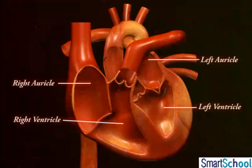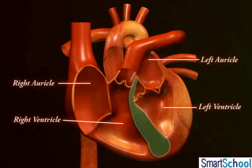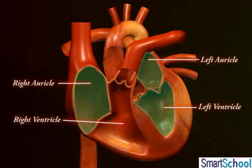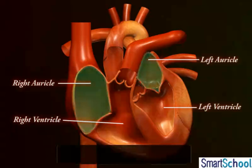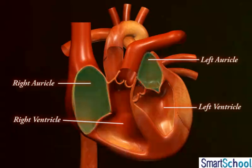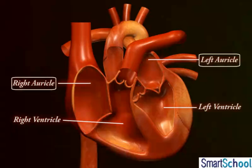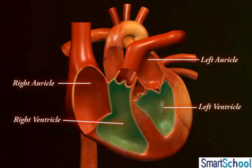The heart is a double pump which is divided by a septa into two halves, the right half and the left half. Each of these halves consists of two communicating chambers, the upper smaller auricle or atrium and the lower larger ventricle. So in all, the heart has four chambers, namely the two upper auricles called the left and right auricles and the two lower ventricles called the left and right ventricles.